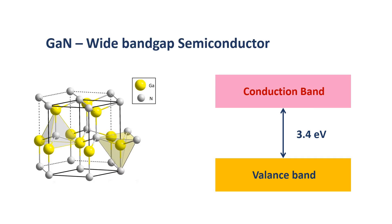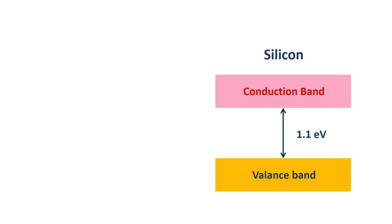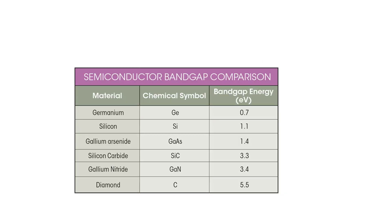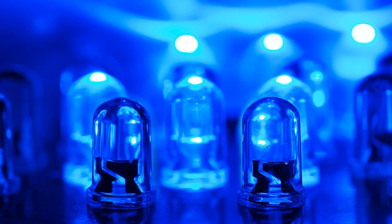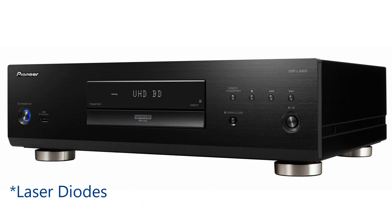So in the case of wide bandgap semiconductor materials, the band gap is more than that of usual semiconductors like silicon and germanium. This table shows the band gap of different semiconductor materials. Because of this wide bandgap, gallium nitride has already been used in photonic applications for a long time — like generating blue LEDs and blue laser diodes, which are also found in Blu-ray DVD players.